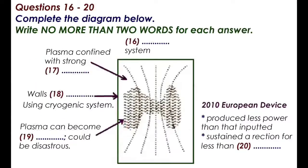Before you hear the rest of the talk, you have some time to look at questions 16 to 20. Now listen and answer questions 16 to 20. So, we know how fusion works. Thus, the big question is, can we create it here on Earth?